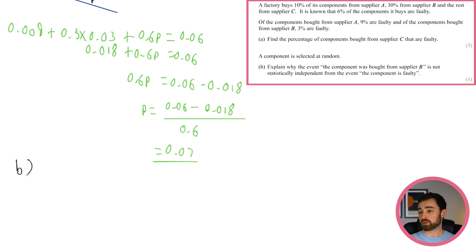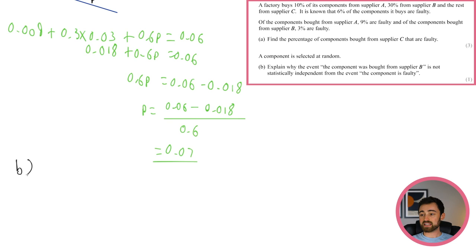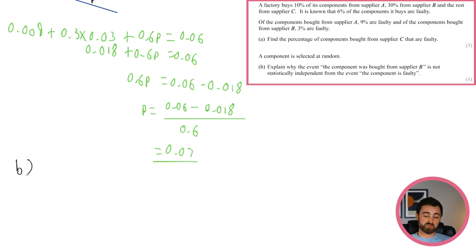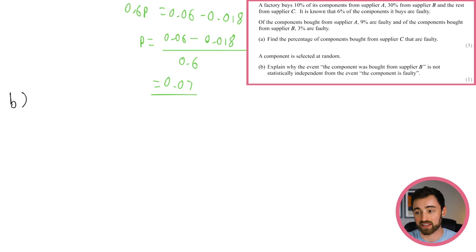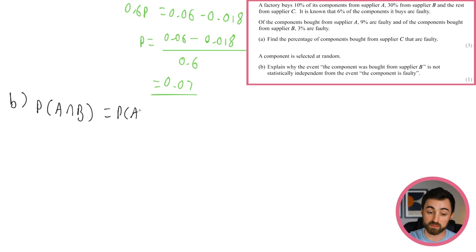Part b: a component is selected at random. Explain why the event 'bought from supplier B' is not independent from the event 'component is faulty.' There's a mathematical way to check this. For two events A and B to be independent, P(A and B) must equal P(A) times P(B). Anytime you see the word independence, use this condition.